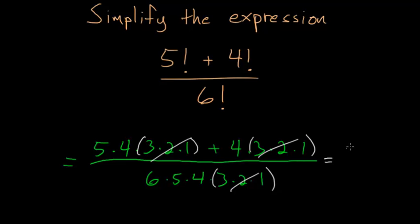And what we're left with is 5 times 4 plus 4 divided by 6 times 5 times 4. And the top simplifies: 5 times 4 is 20, plus 4 is 24.